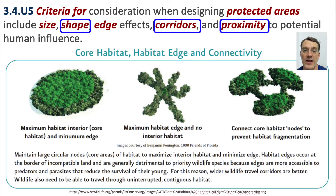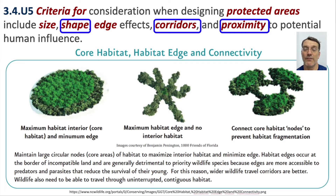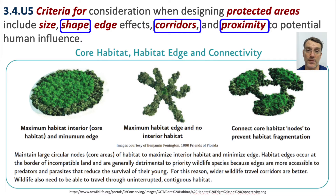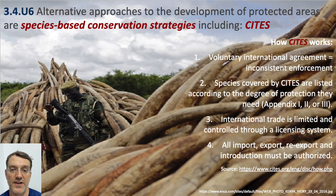The closer a protected area is to being round, the better, because the edge effect is minimal with a round shape. With long, narrow, skinny shapes, the core becomes very small and the edge space becomes quite large. If it's not possible to design one big core area, the next best approach is to design several smaller core areas and connect them through corridors to allow wildlife to migrate back and forth between the protected areas.